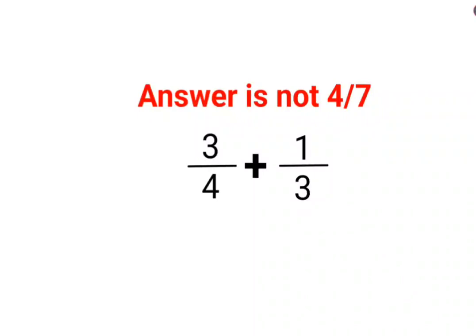Welcome everyone. Today we are going to understand how to add two fractions. A lot of people make this mistake of adding the direct numerators and denominators. That's why they thought the answer is 3 plus 1, which is 4, and 4 plus 3, which is 7. No, that is incorrect.